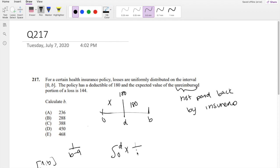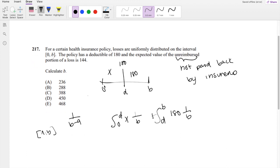So this will be 1 over B plus from deductible to the limit, it's going to be 180 times 1 over B. But we know deductible is 180, so we can just put those in there.